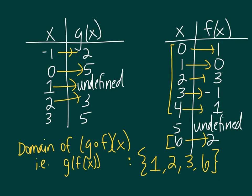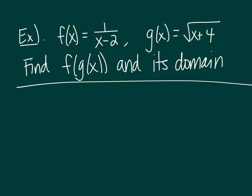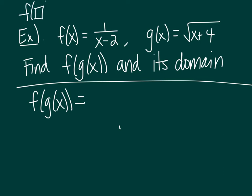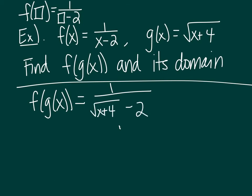Now let's try this with an algebraic example, similar to what we did in class. Given these two functions — f takes what you give it and pairs it with 1 over that minus 2, and g takes what you give it and pairs it with the square root of that plus 4 — let's find the composite function and then its domain. For the composite function, everywhere you see f, think of f as pairing the input with 1 over that minus 2. If we give it g as the input, the output will be 1 over the square root of x plus 4, minus 2. We can leave it in this form and focus on the domain.